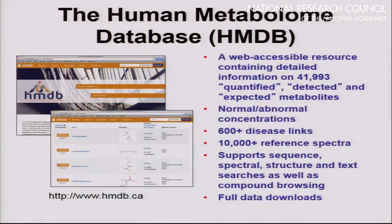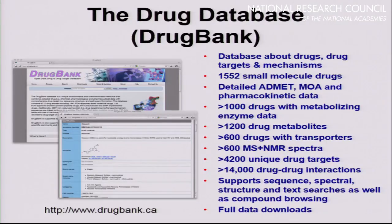The Human Metabolome Database currently contains almost 42,000 compounds, classified into quantified, detected, and expected ones — those we know from biology must exist but haven't had the sensitivity to detect. We've collected lots of concentration data, linked them to many diseases, and provide lots of reference spectra. Tools allow people to search by text, spectra, structure, or sequence. All data is free and freely downloadable. DrugBank allows us to look at drugs and drug metabolites, with information on metabolic processes, transport processes, spectral data, drug targets, and drug-drug interactions — appealing more to pharmacologists, but it is part of the exposome.